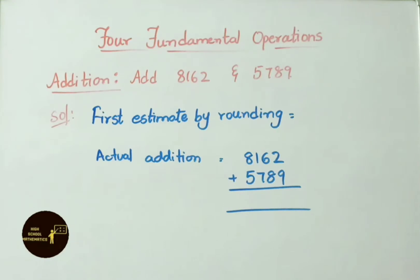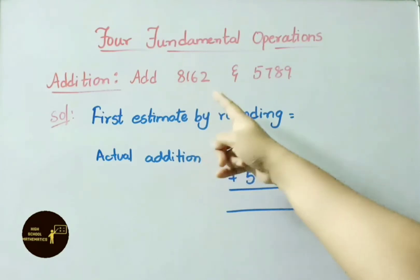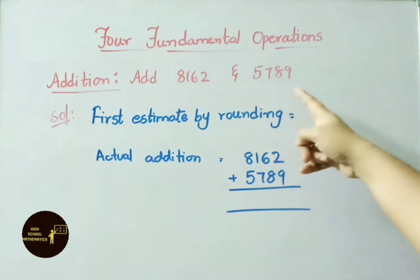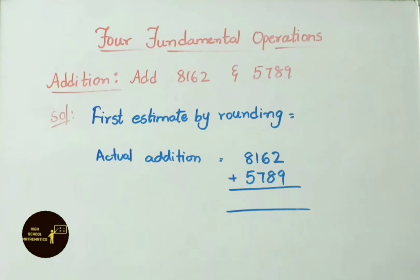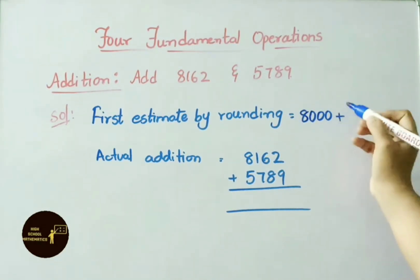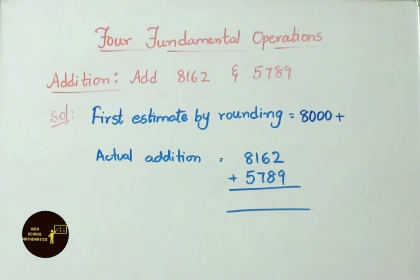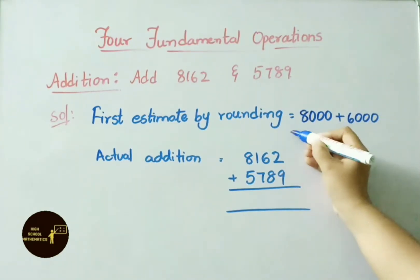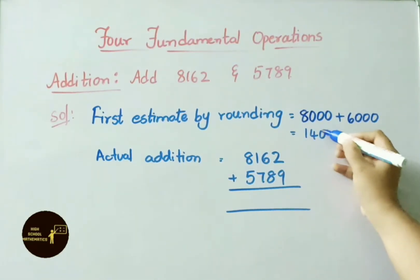Now let us see the 4 fundamental operations — addition, subtraction, multiplication and division — by estimation of values. Example for addition: add 8,162 and 5,789. First estimate by rounding off: 8,162 rounded to the nearest thousand is 8,000, and 5,789 rounded is 6,000. Adding both estimated values gives 14,000.